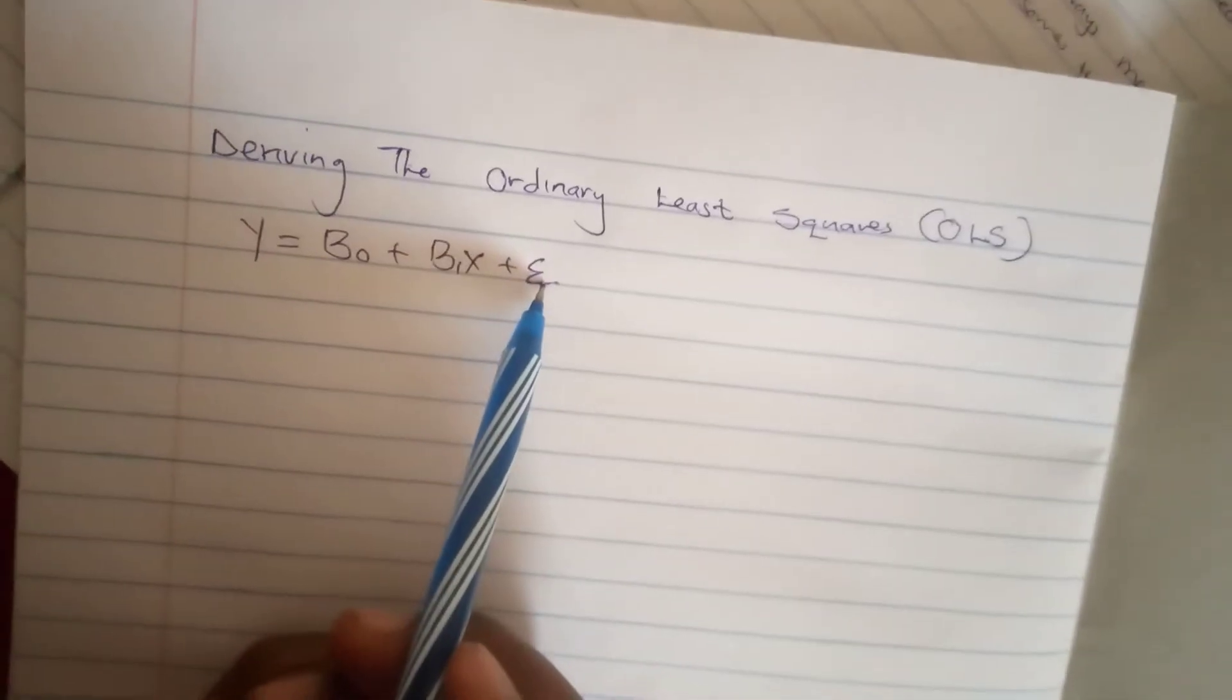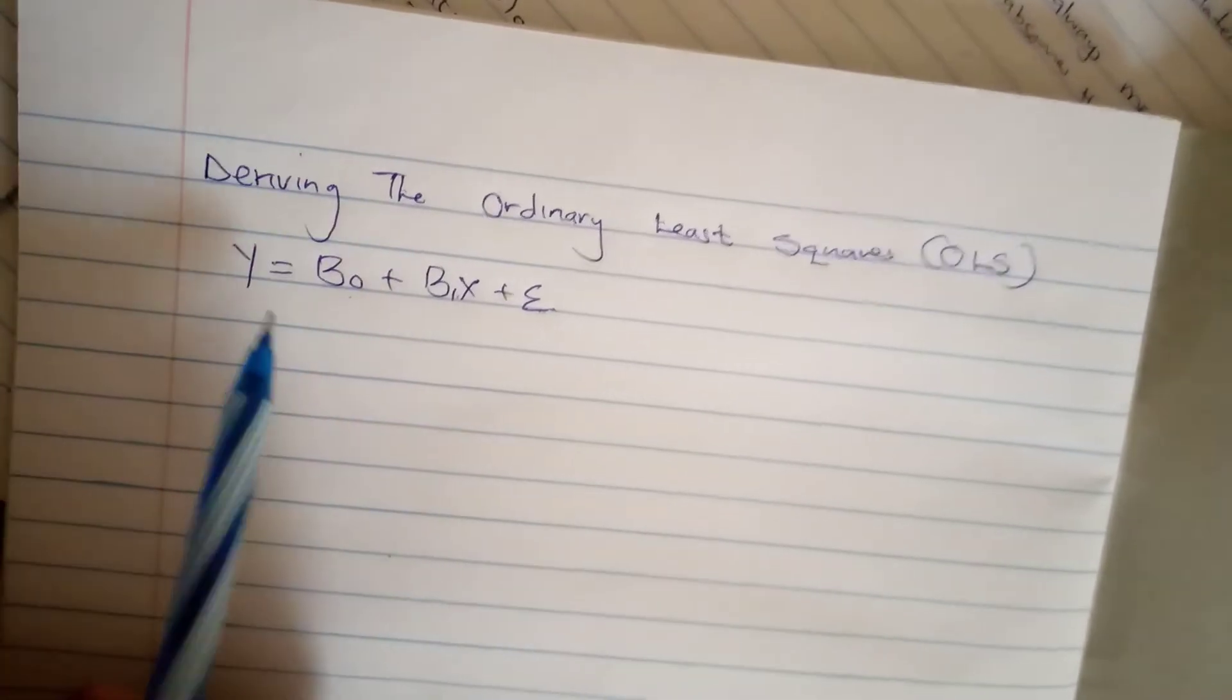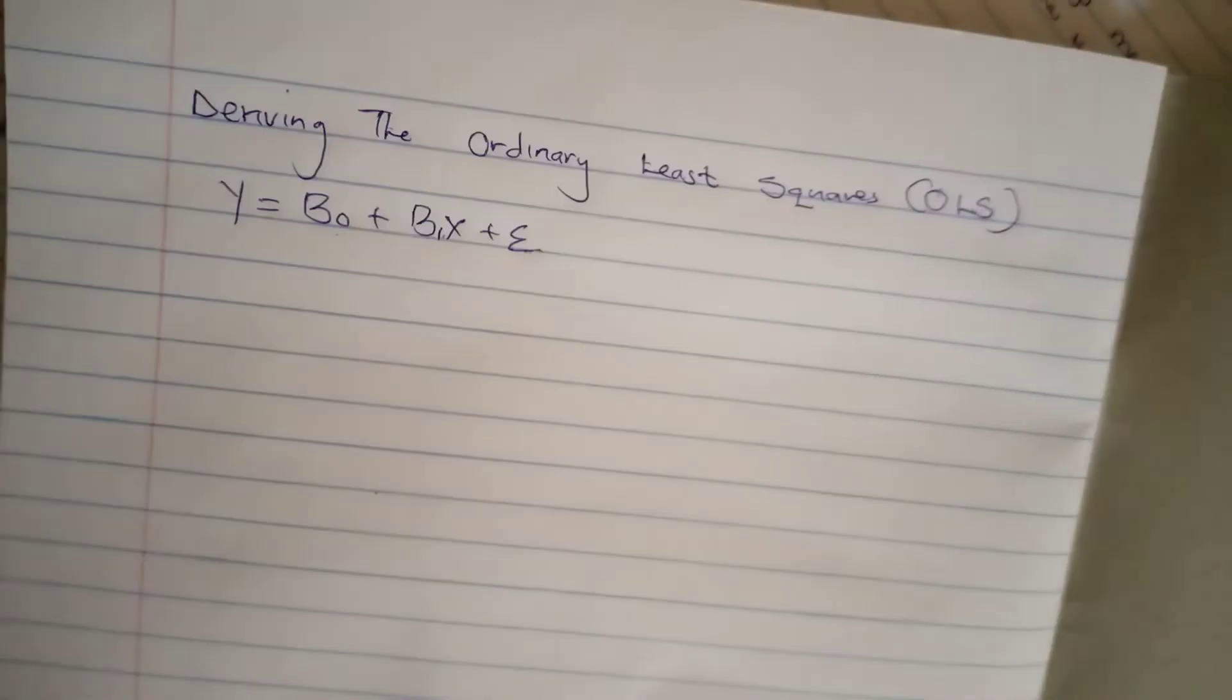Today we are deriving the OLS, the Ordinary Least Squares. You are given an equation like this one. I hope you understand what E is - it's an error term, and these are variables, and this is Y.